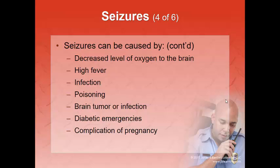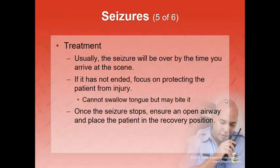As far as complications of pregnancy, it has to do with blood pressure — when it gets really high we call that state preeclampsia. And then when they actually have the seizure, we call it eclampsia. We cover that again in our pregnancy lesson.